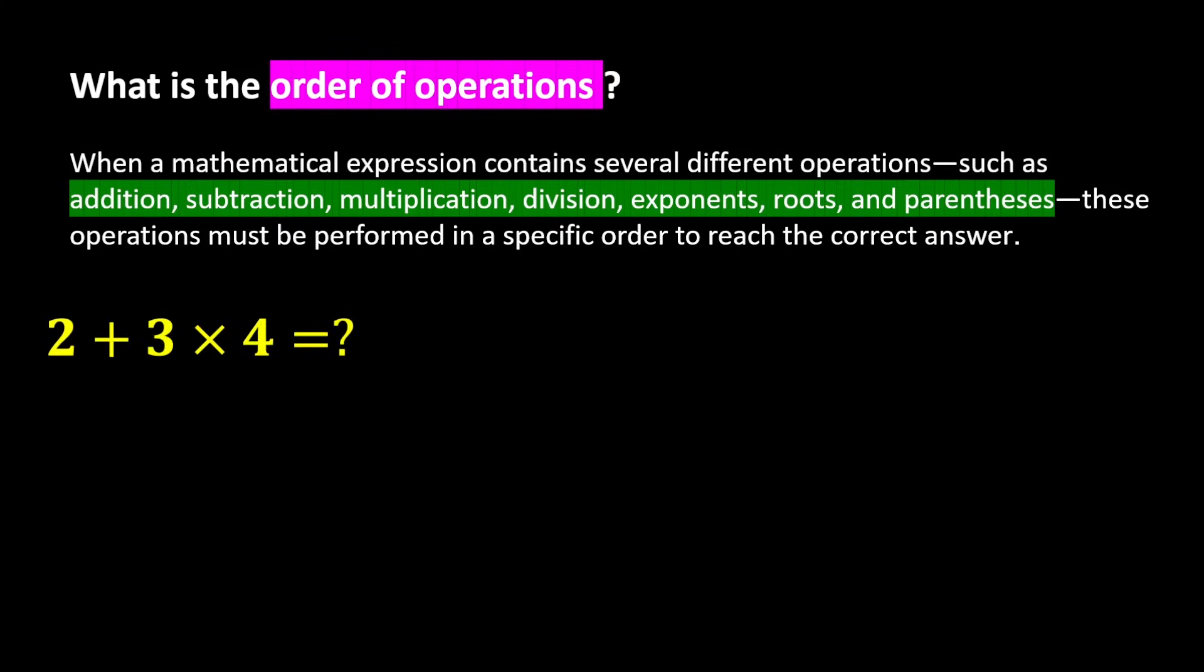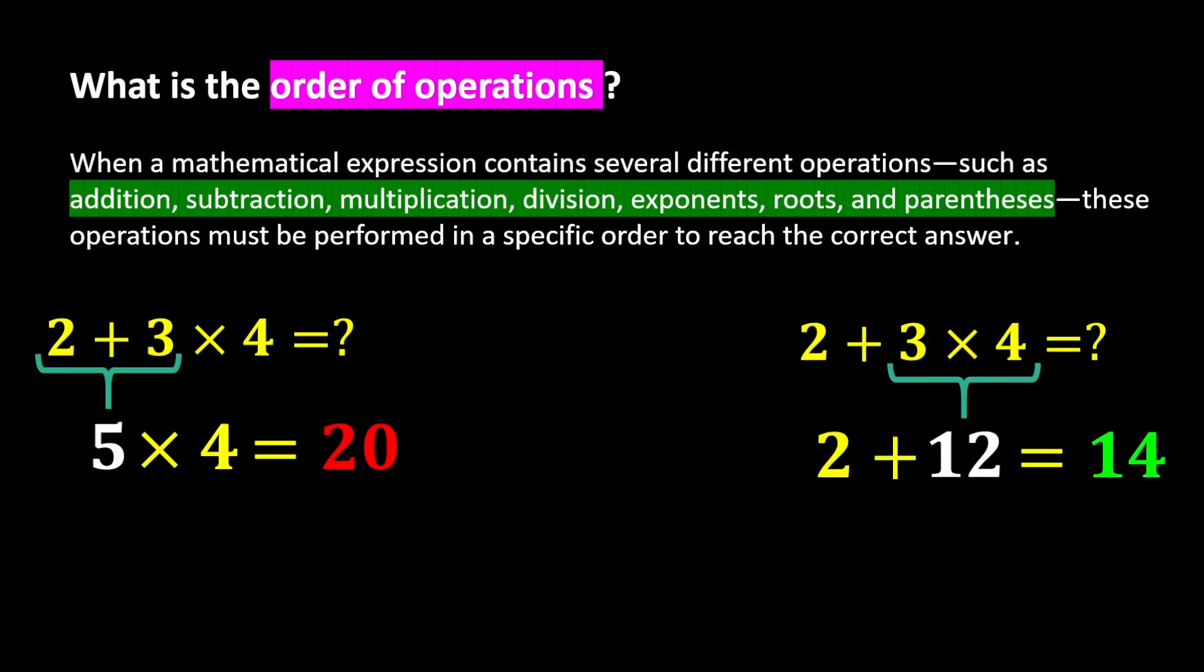For better understanding, look at this example, 2 plus 3 times 4. If we first add 2 and 3, we get 5. And then multiply 5 by 4, we get 20. But if we first multiply 3 by 4, we get 12. And then 2 plus 12 becomes 14.